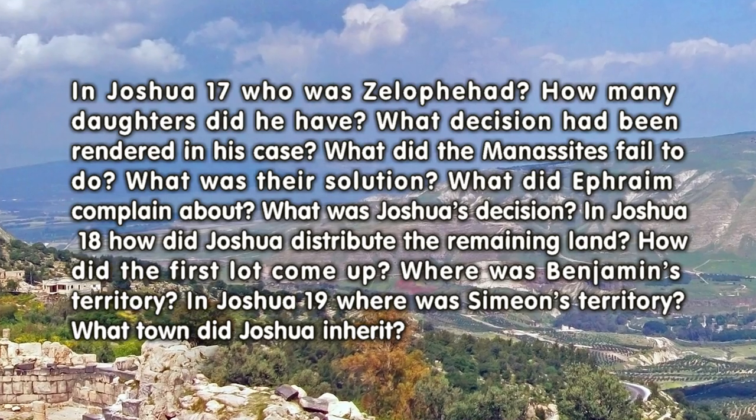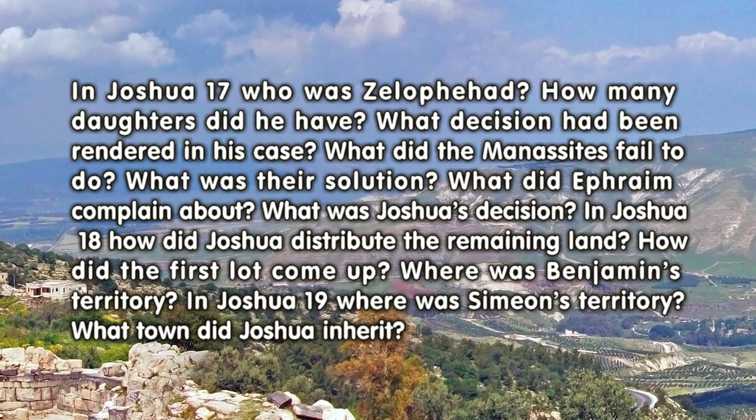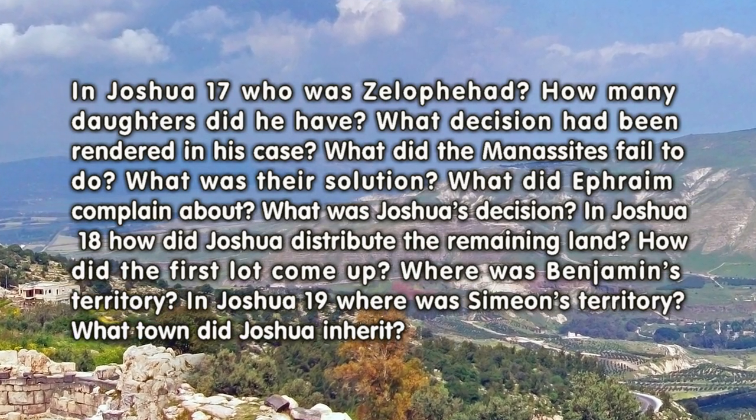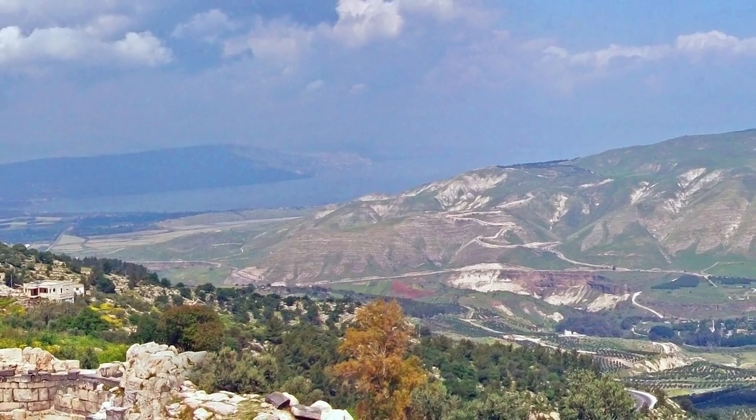In Joshua 19: Where was Simeon's territory? What town did Joshua inherit?